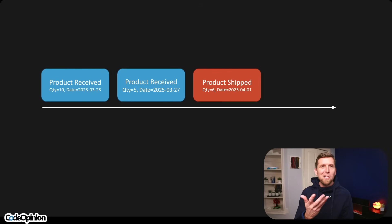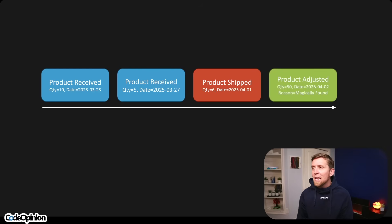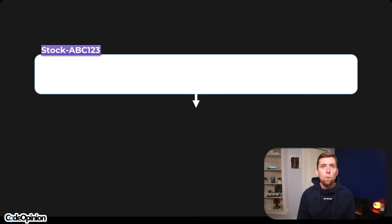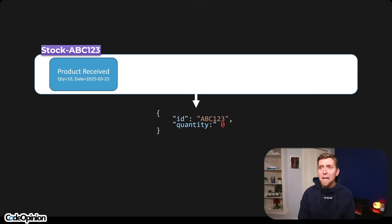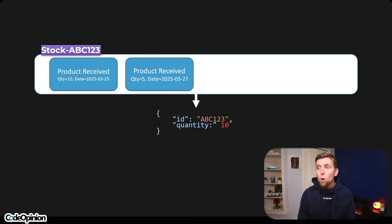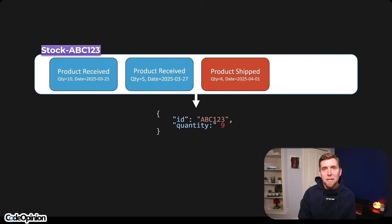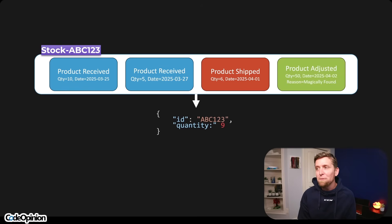Then we've shipped out six, so now we have nine products available. Then we do a stock count and realize there's a box of 50 back there, so technically we have 59 of that stapler on hand. Using events and a series of events, you can transform that into current state in a shape that's useful to you. In my case, I just care about quantity on hand: we started at zero, received 10, updated to 15, shipped some out down to nine, did an inventory adjustment and updated to 59. I'm doing this pre-computation as events occur to record current state.